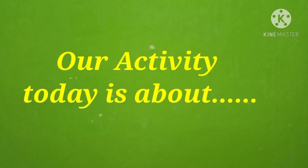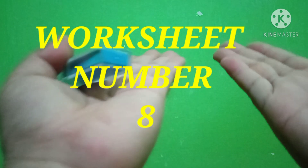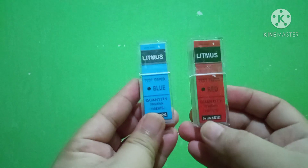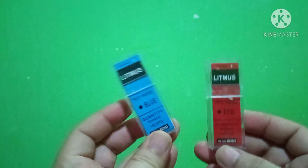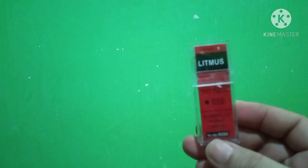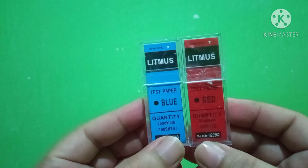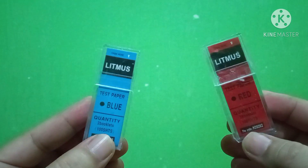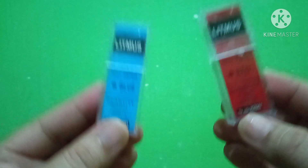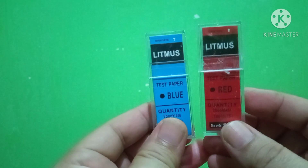Our activity today is all about acids and bases. This will serve as your worksheet number eight. We have two litmus papers: this one is a blue litmus paper, and this one is the red litmus paper. Take note of how litmus paper looks — we will use it to test the acidity and basicity of a solution.